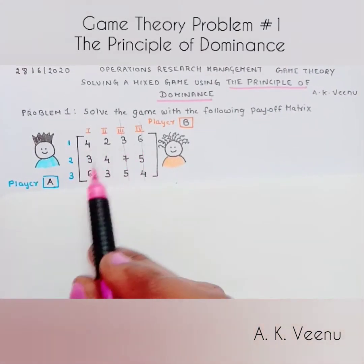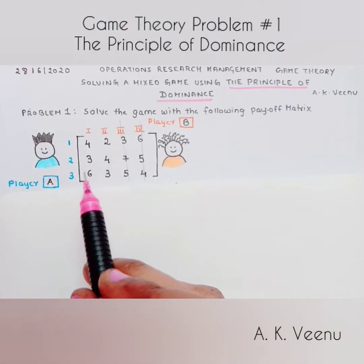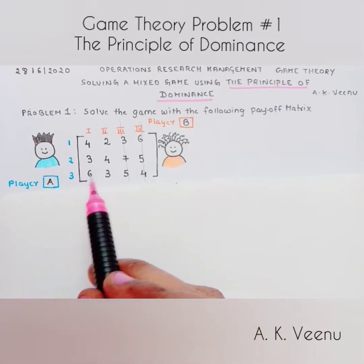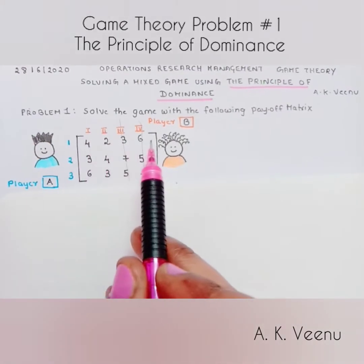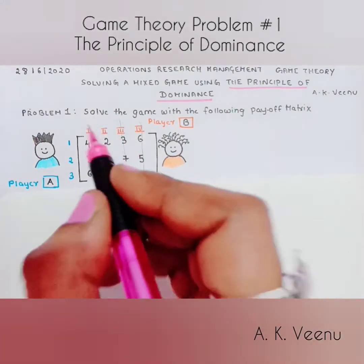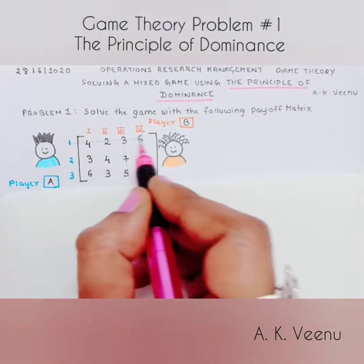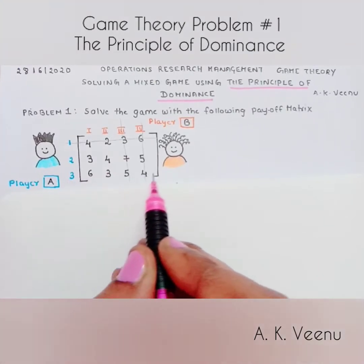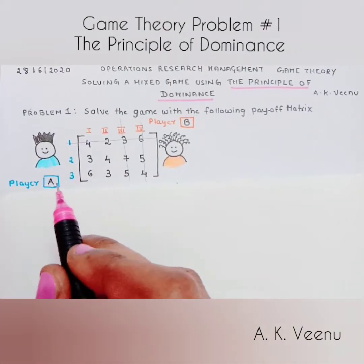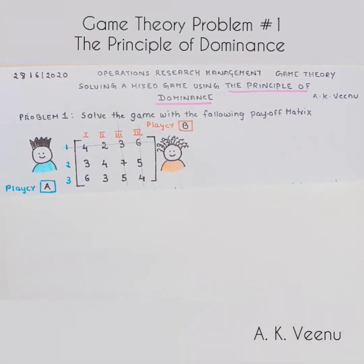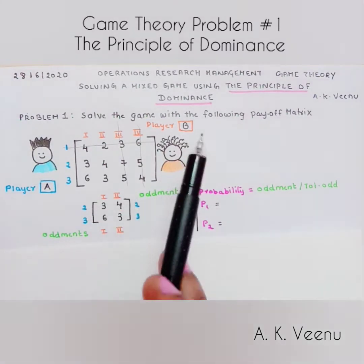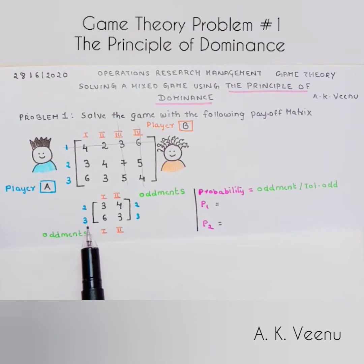Now let's go to player A and compare the rows. We find that the third row elements, except the last one, are greater than the first row elements. We cancel out the first row because the idea is to maximize the gain of player A. We are now left with columns 1 and 2 of player B and rows 2 and 3 of player A.